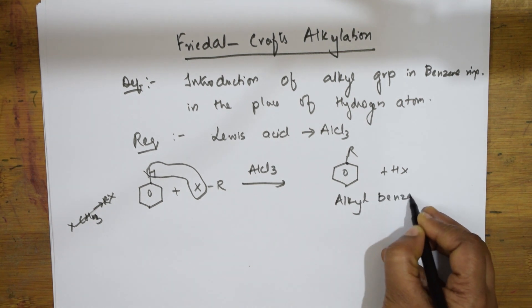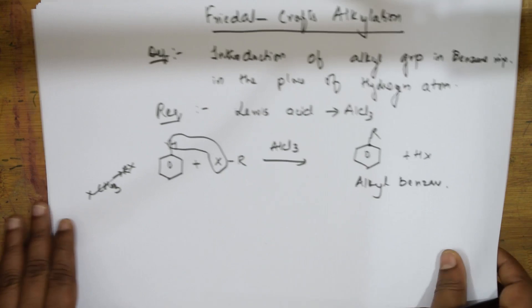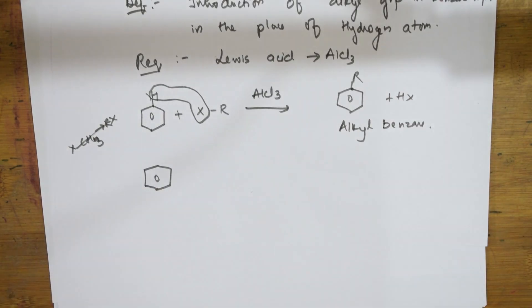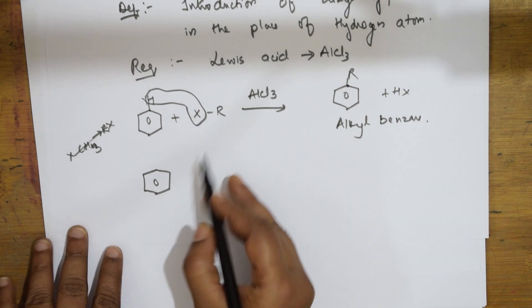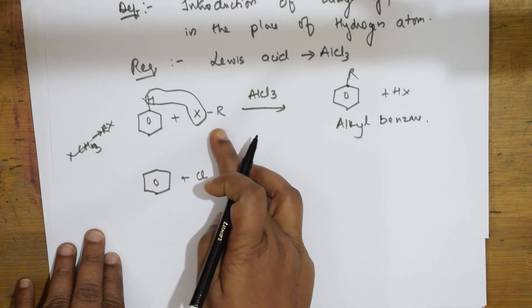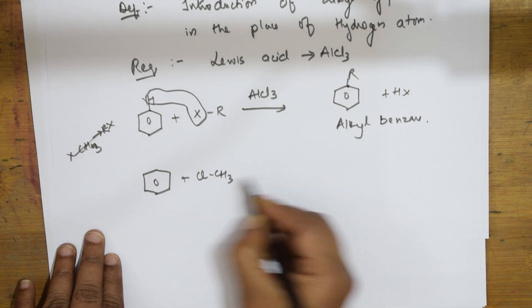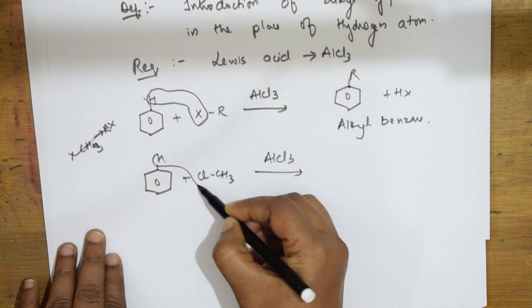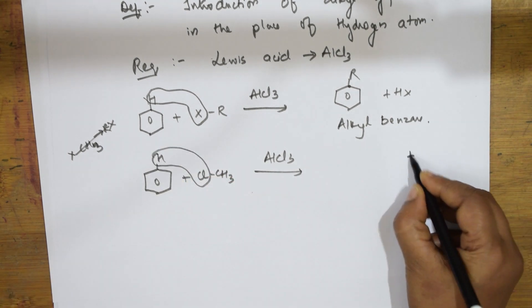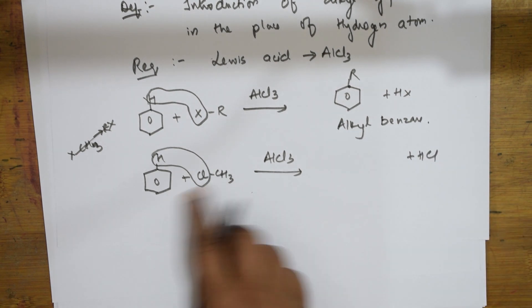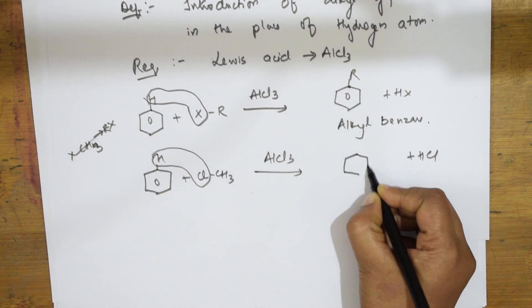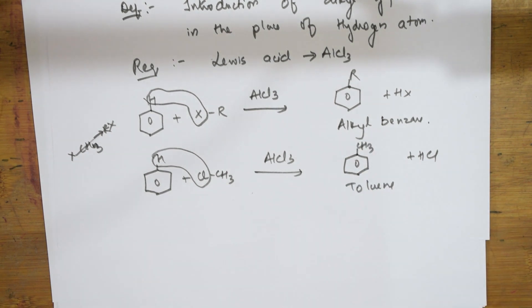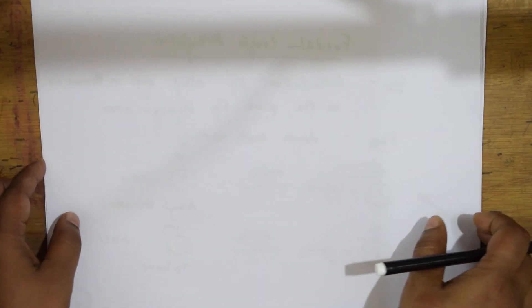Let's take an example. Take a benzene ring and use CH₃Cl (methyl chloride) as the alkyl halide. In the presence of aluminum chloride, the hydrogen on benzene comes out as HCl, and the CH₃ group attacks and attaches to the ring, forming a compound called toluene.